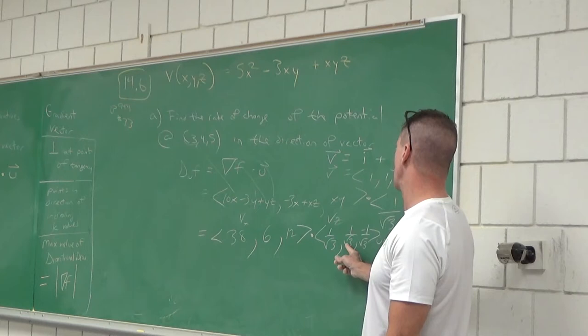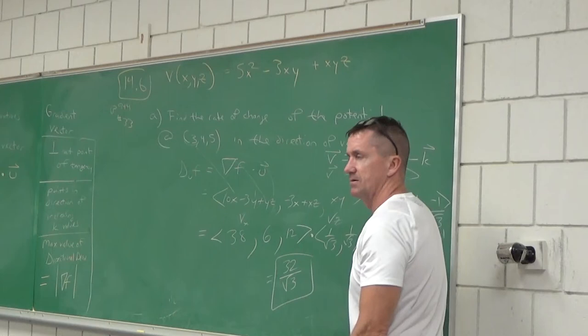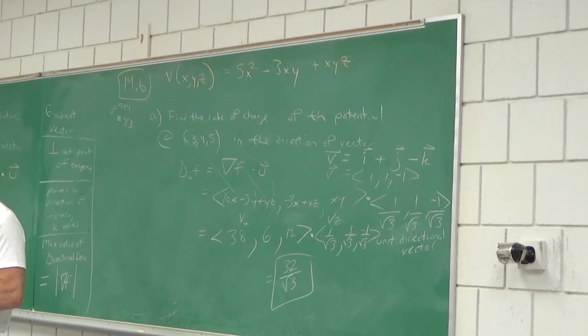You can leave the answer as 32/√3 — you do not have to rationalize the denominator. That's part A. There are also parts B and C.